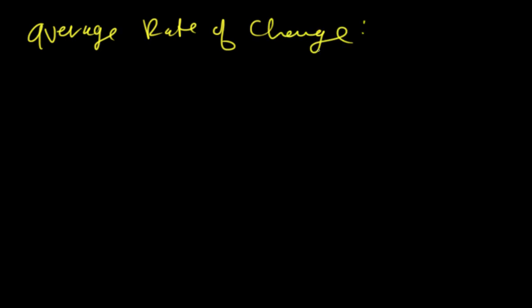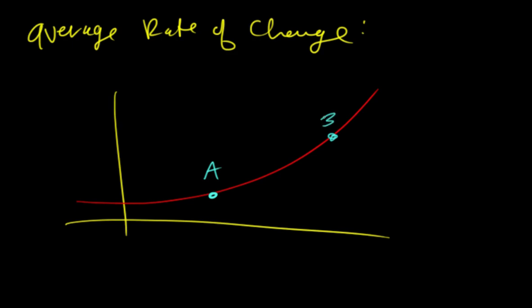So average rate of change is really just the gradient or the slope, and so if we have like a curve that looks like this, and we check two points, call this point A, point B.